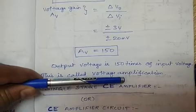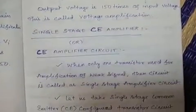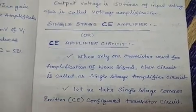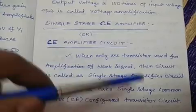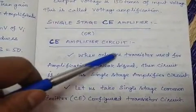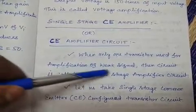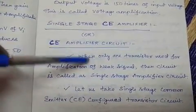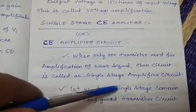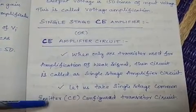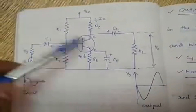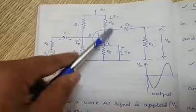Next, we will discuss the single-stage CE amplifier circuit. When only one transistor is used for amplification, that circuit is called a single-stage amplifier. If two transistors are used it is a two-stage amplifier, and three transistors make a three-stage amplifier. Here we use only one transistor, so this is a single-stage common emitter configured transistor circuit.